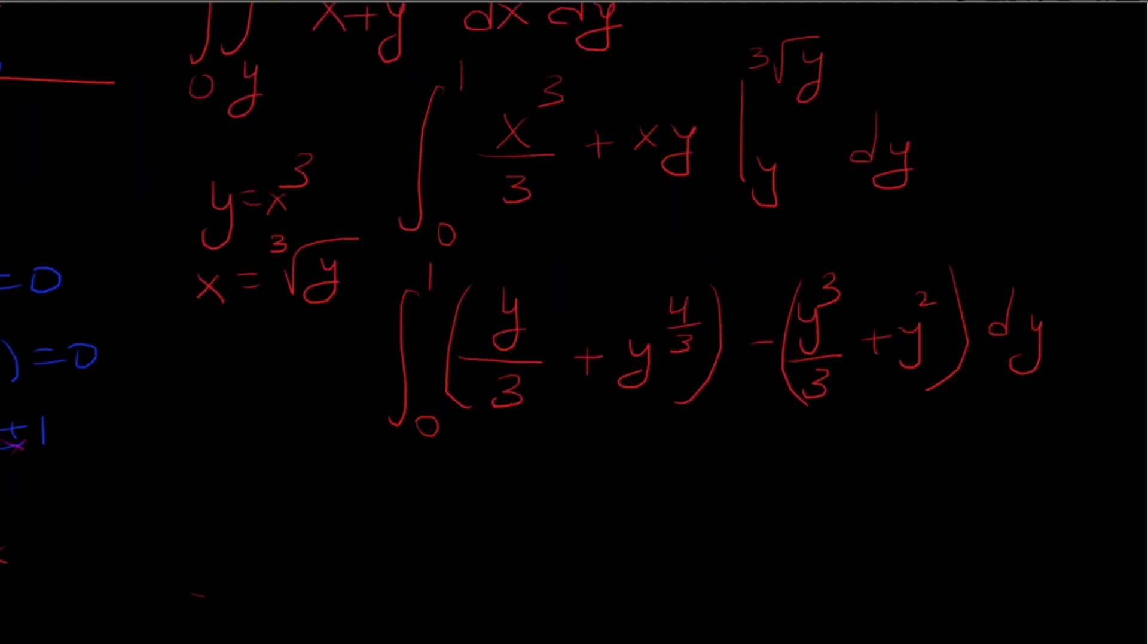So now I'm going to integrate this with respect to y. So that's y squared over 6 plus 3 over 7 y to the 7 thirds minus y to the 4th over 12 minus y cubed over 3 going from 0 to 1.